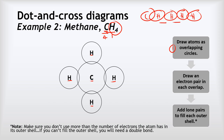Step two is that we're going to draw an electron pair in each overlap — so that gives us four electron pairs because we've got four overlaps. Step three is to add in lone pairs to complete each outer shell. Carbon now has eight electrons in its outer shell, so there's no need to add any lone pairs for that. And each hydrogen only needs two electrons, and they've all got that because the pair in the overlap counts for both. So we don't need to add any lone pairs in this example.